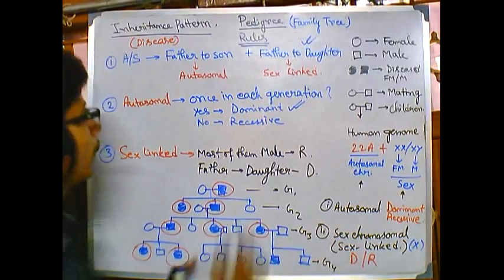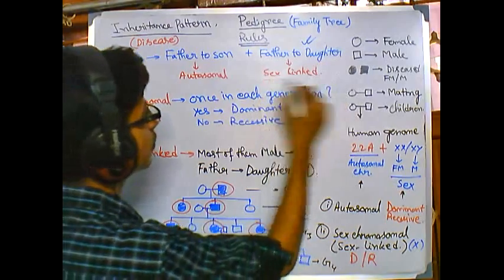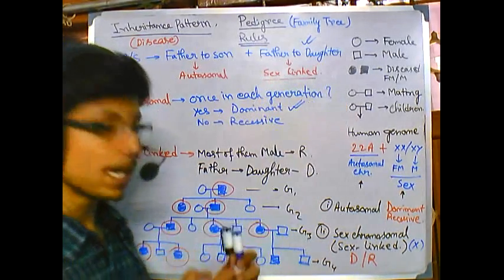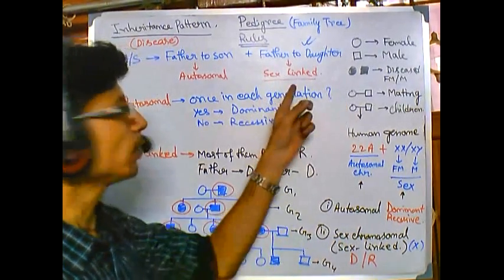What is the fact? Father to daughter inheritance means that must be of sex linked type. And I have told you before, this is a foolproof formula.